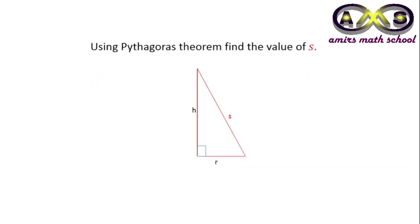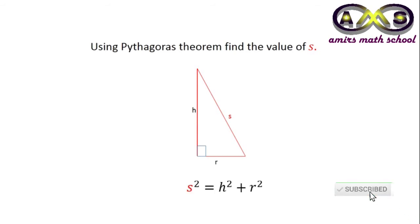With the help of the Pythagorean theorem, we can easily find the value of s, the slant height. That is: s² = h² + r², so s = √(h² + r²).